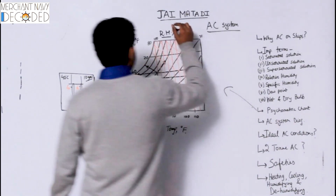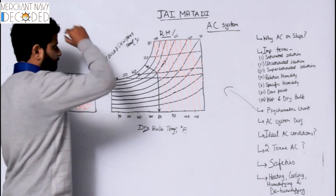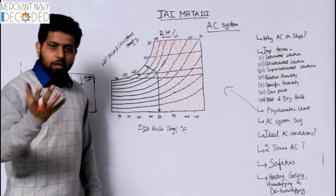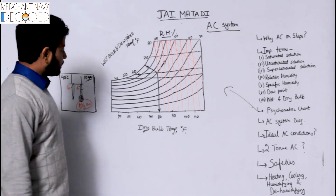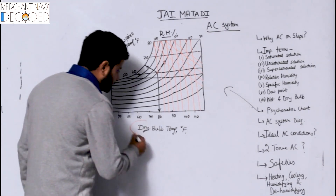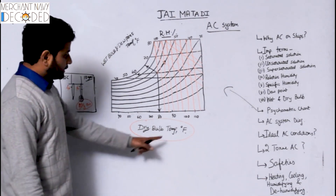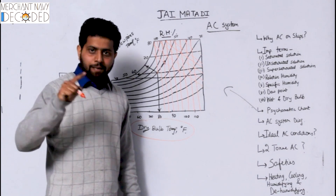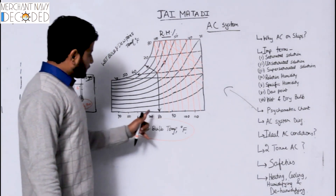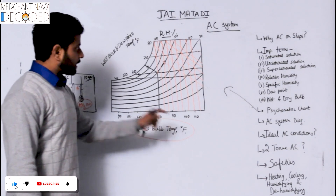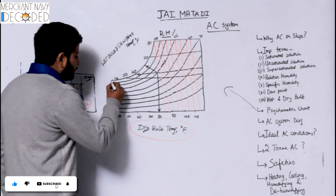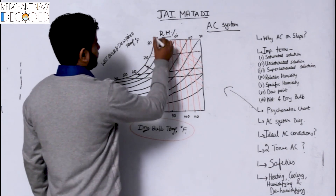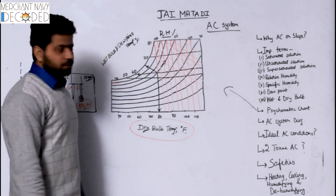And that is where the psychrometric chart comes into play. This has also been a question in many online exams. The x-axis is dry bulb temperature in degrees Fahrenheit — 40, 50, 60, 70, 80, 90, 100, 110°F. The conversion formula is C/5 = (F − 32)/9. The curved lines going upward show relative humidity — say 100%, 50%, 40%, 30%. These are the relative humidity lines.